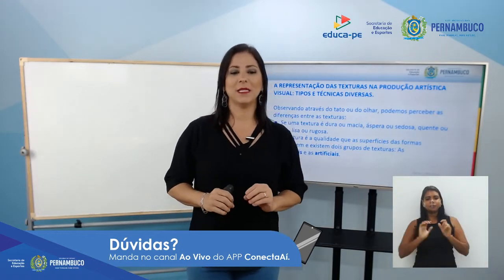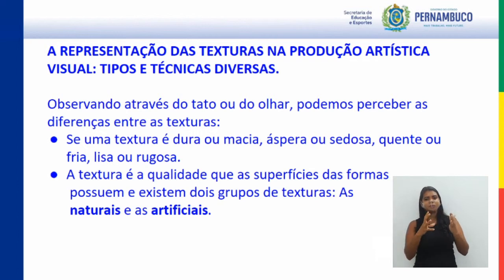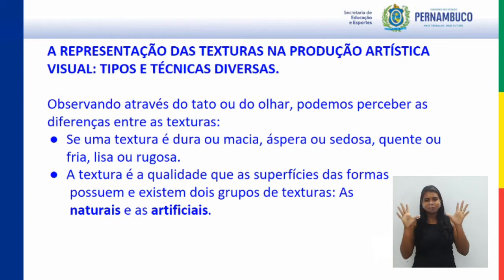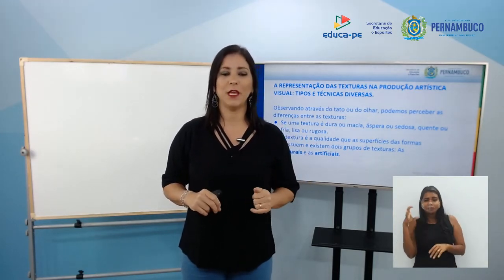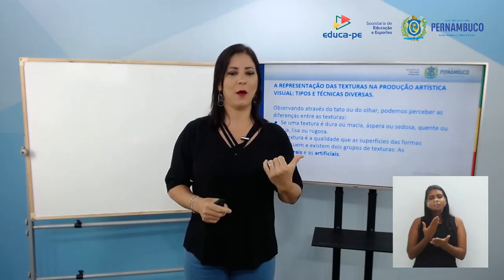A representação das texturas na produção visual traz tipos e texturas. Observando através do tato ou do olhar, podemos perceber as diferenças entre as texturas: se uma textura é dura ou macia, áspera ou sedosa, quente ou fria, lisa ou rugosa. A textura é a qualidade que as superfícies das formas possuem. Existem dois grupos de texturas: as texturas naturais e as artificiais.